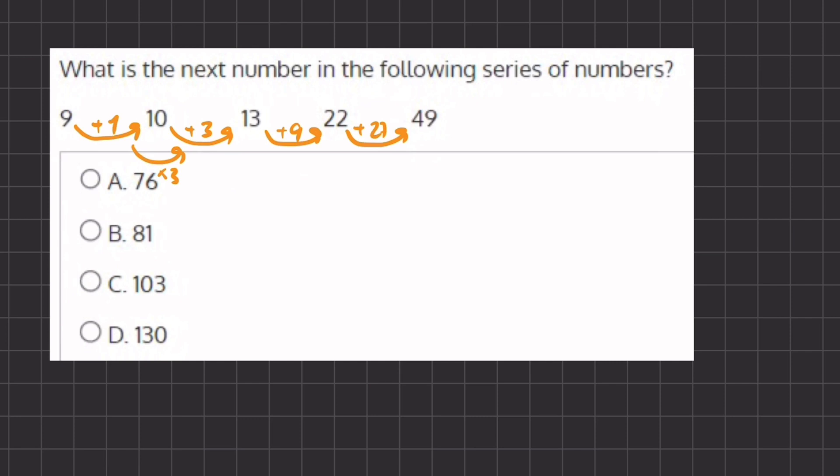So 1 times 3 gives us 3. 3 times 3 gives us 9. 9 times 3 gives us 27.